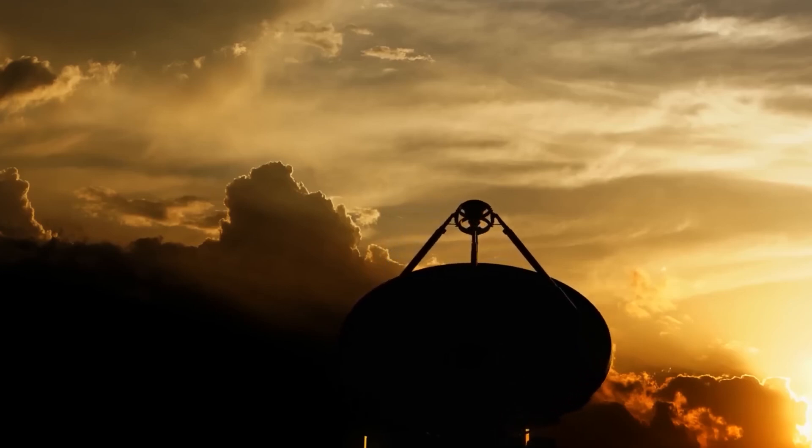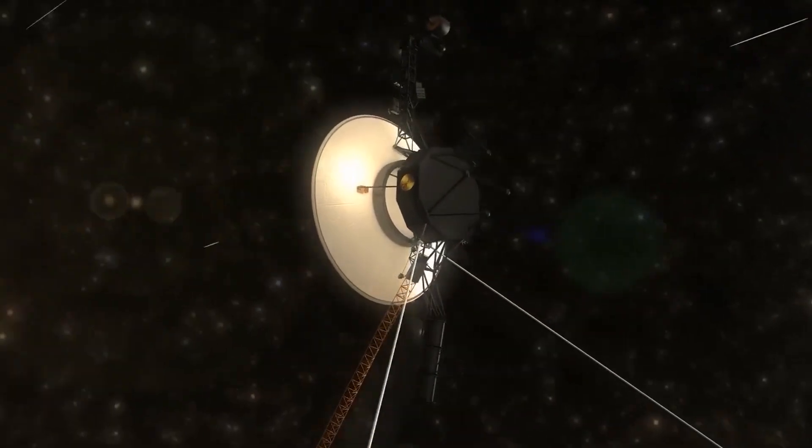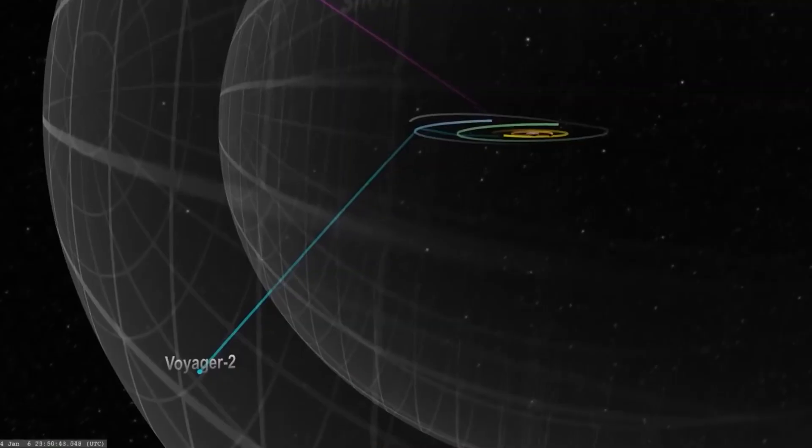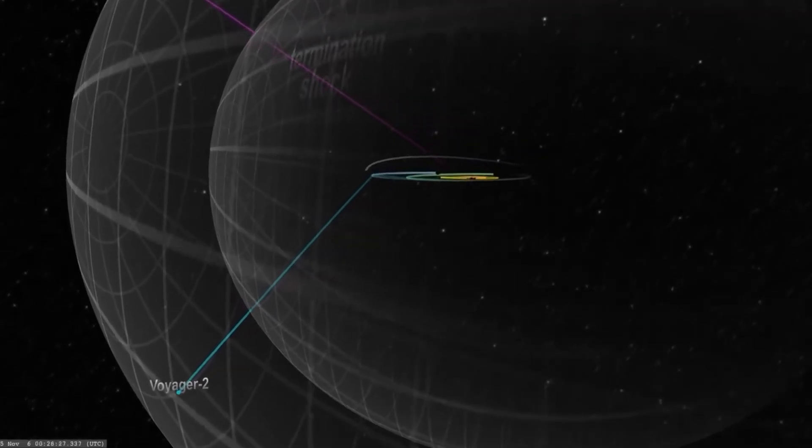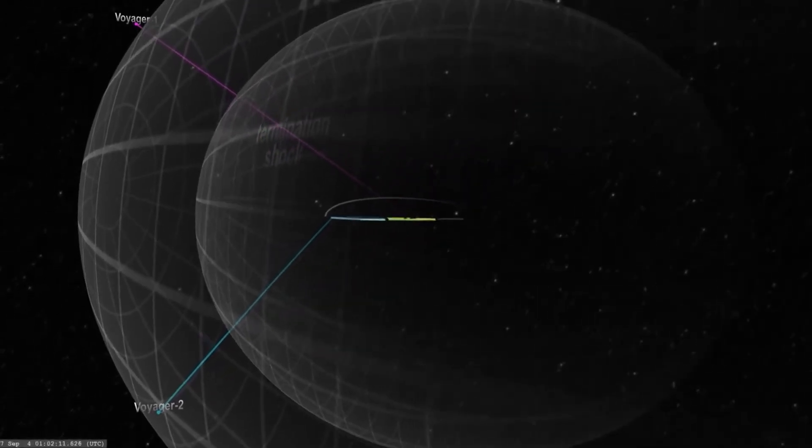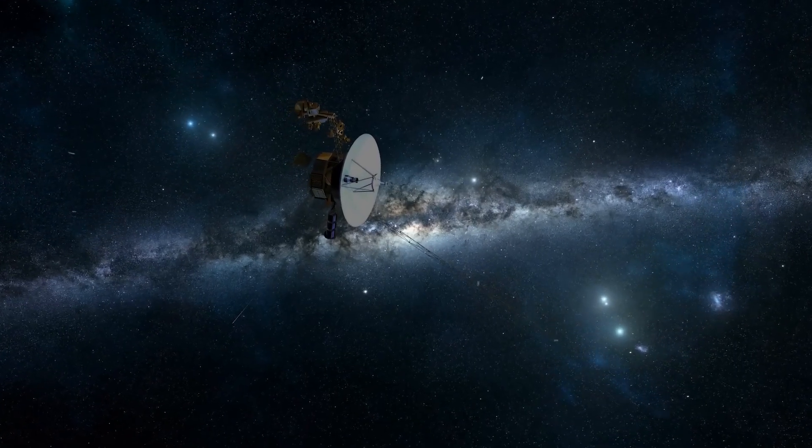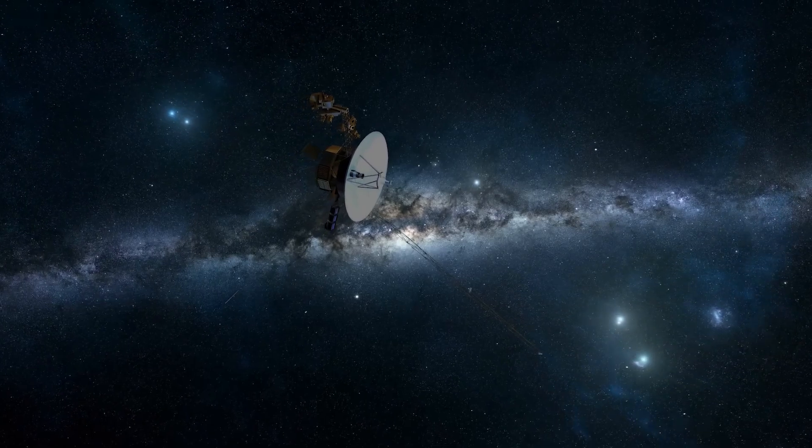However, the Voyager probes did not detect any significant changes in the magnetic field. It was on August 25, 2012, that Voyager 1 finally crossed the heliopause and transmitted fascinating data confirming the expected increase in plasma density, although without evidence of a change in magnetic fields.